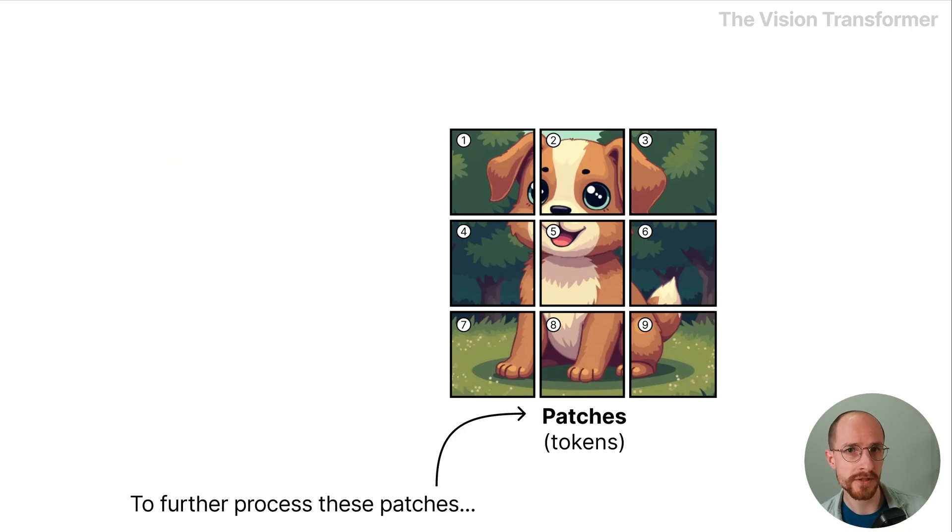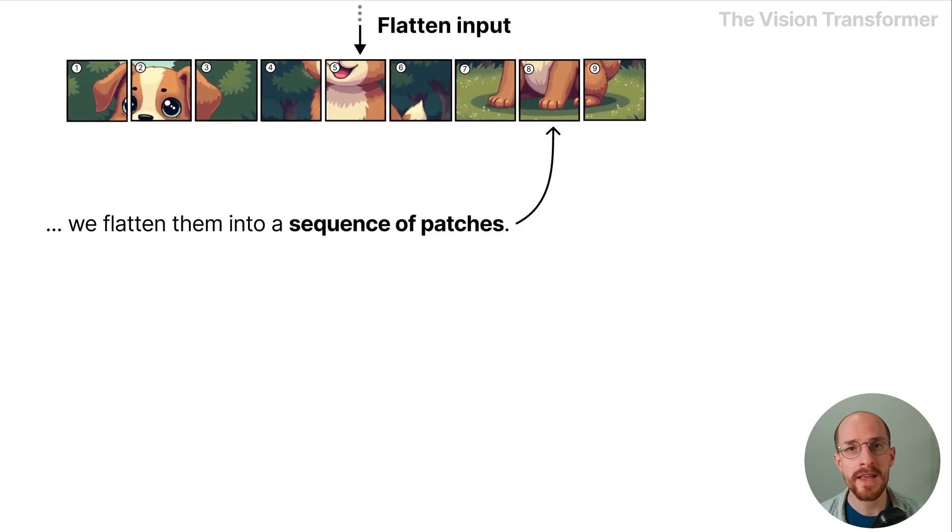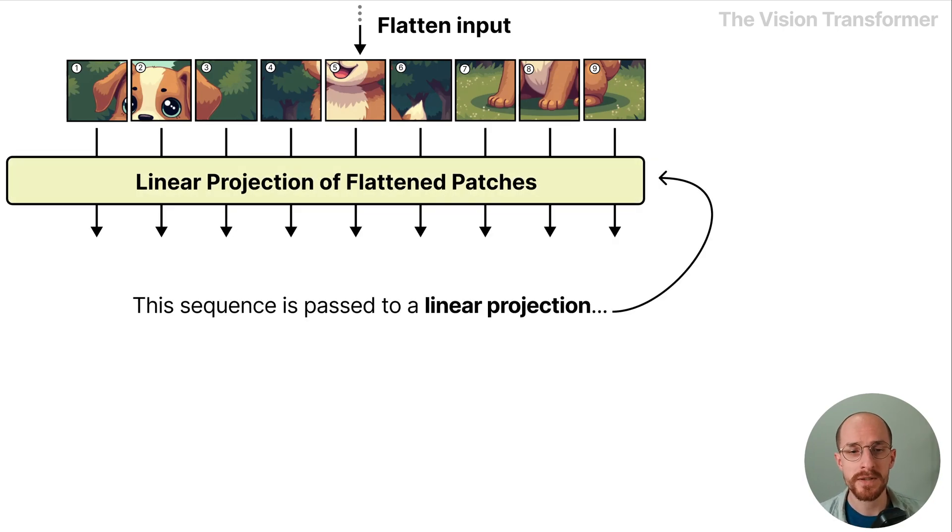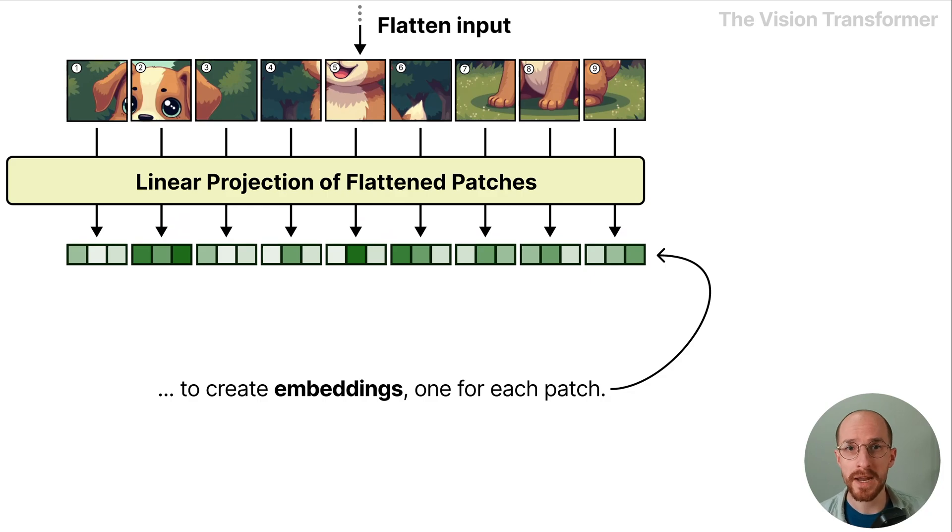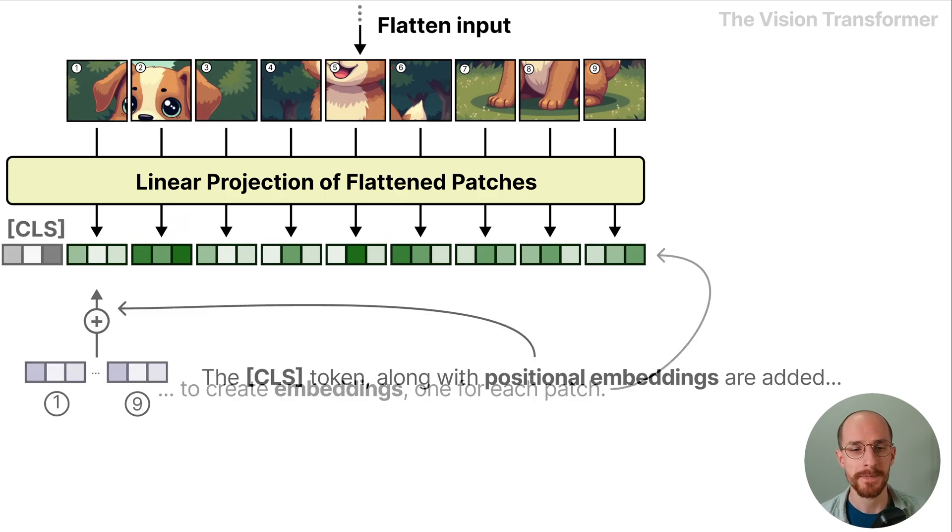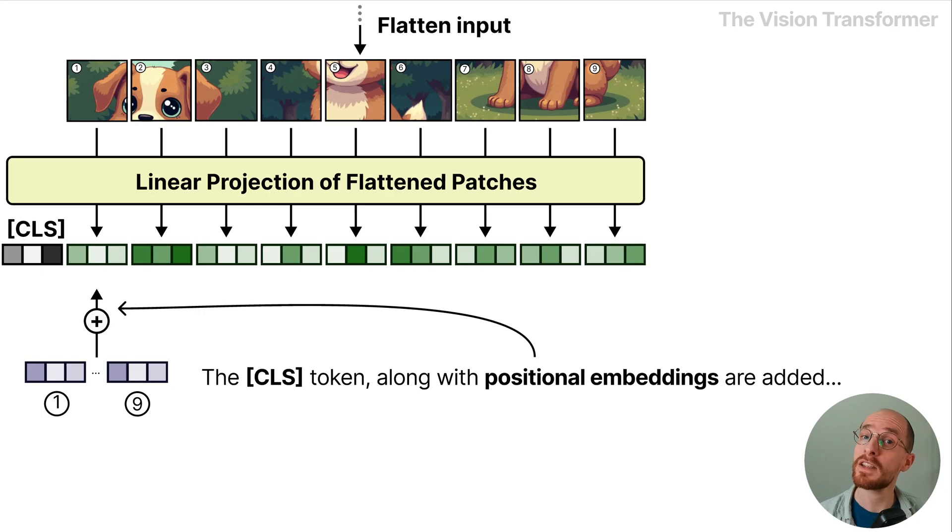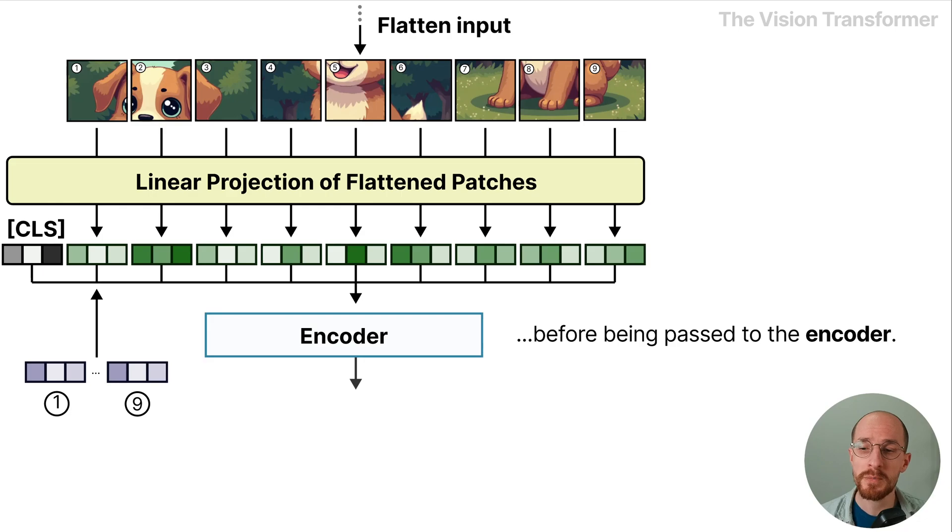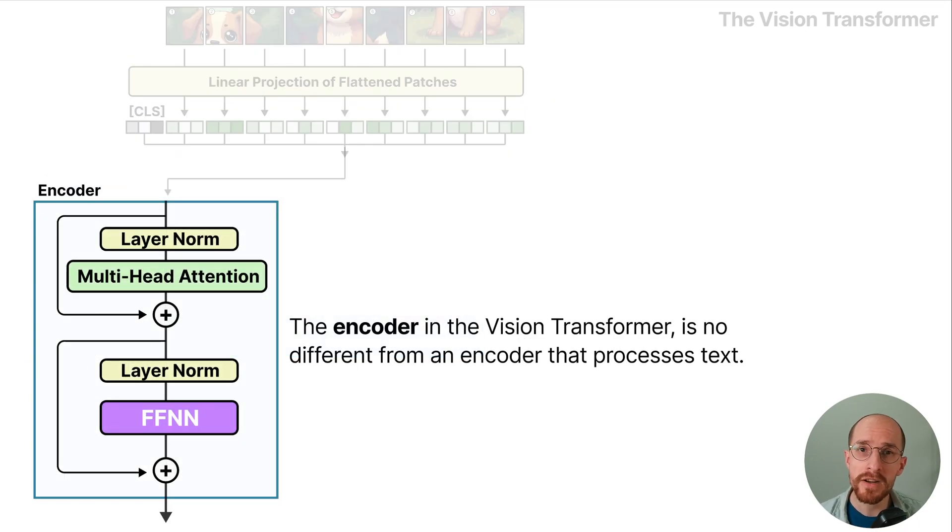To further process these patches we flatten them into a sequence of patches. This sequence is passed to a linear projection to create embeddings, one for each patch. The CLS token or the classification token is added along with positional embeddings before being passed to the encoder. The encoder in the vision transformer is no different from an encoder that processes text.